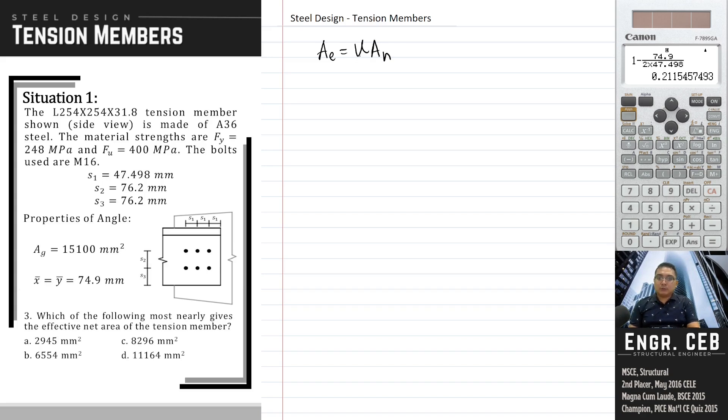For U, we have already solved for U. The value of our U is 0.6. For tensile rupture, when determining the net area, we consider the section with bolts. In this case, this will be our net section.